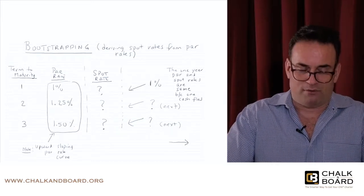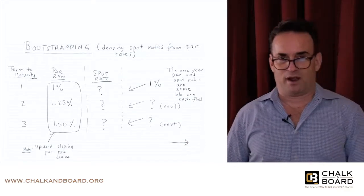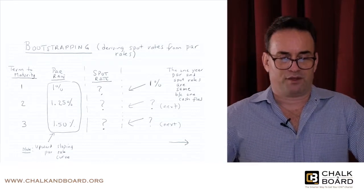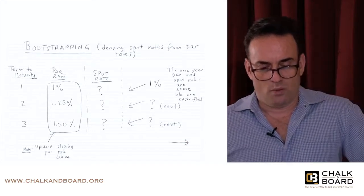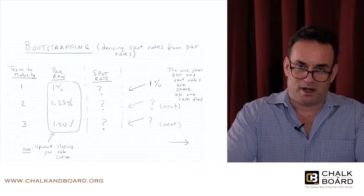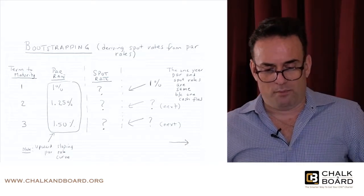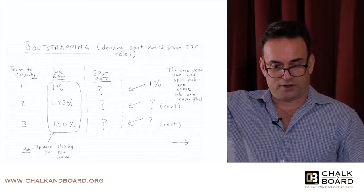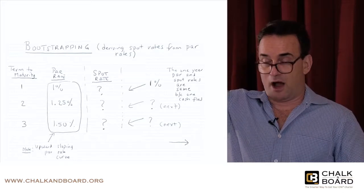The important point is that spot rates can be derived from par rates, and forward rates can be derived from spot rates. In this example, we have three terms to maturity: one year, two year, and three year. The par rates are 1%, 1.25%, and 1.5%, meaning the coupon rates are those same values since the bonds are at par. The par rates increase with maturity, so we have an upward-sloping yield curve.